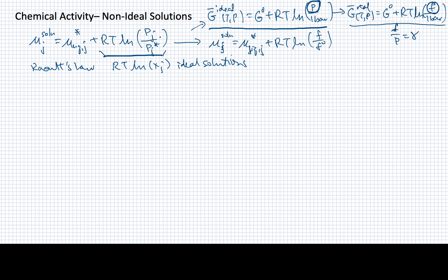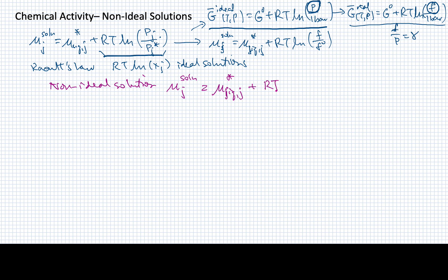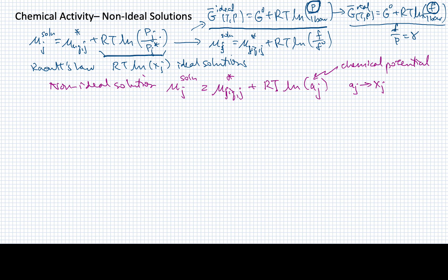We're going to make a very similar sort of change when we go to a non-ideal solution — let me mark this in purple to put some emphasis on it. A non-ideal solution is one where we might write: the chemical potential of the solution equals the chemical potential of pure liquid j, plus RT times the log of a quantity I'll call a_j. This a_j is something we call the chemical activity, and you can see that a_j goes to x_j — the chemical activity becomes the same as the mole fraction for an ideal solution.